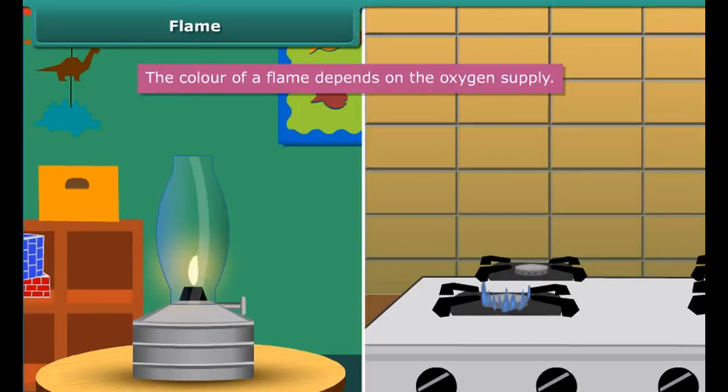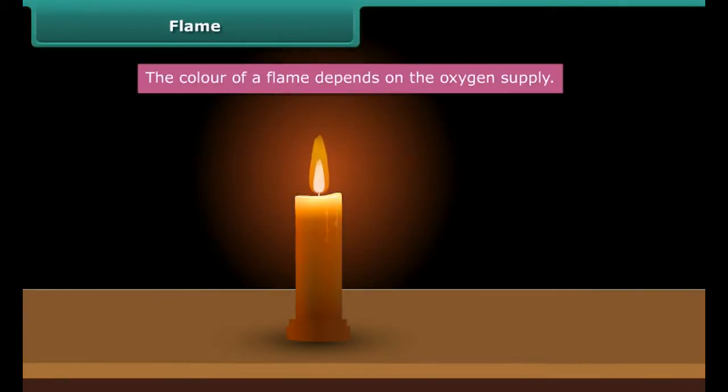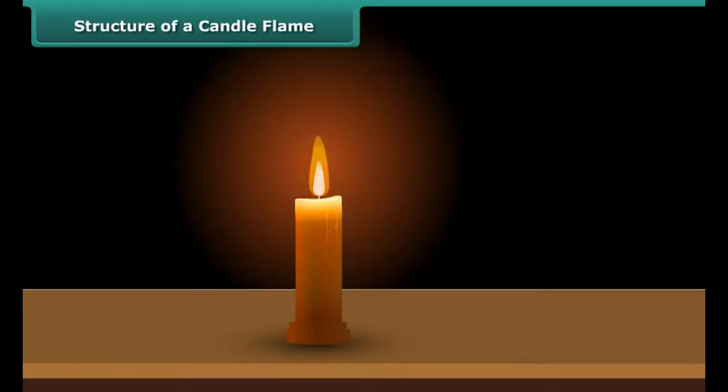When we burn the candle with a matchstick, the heat of the matchstick melts and vaporizes wax which rises through the wick and forms flame. A candle flame can be divided into three regions.